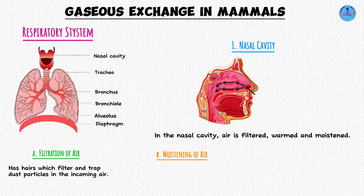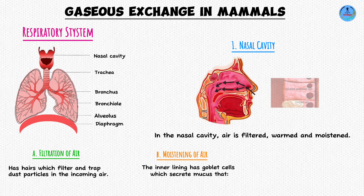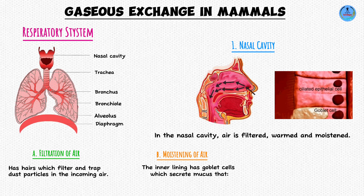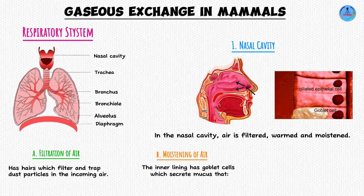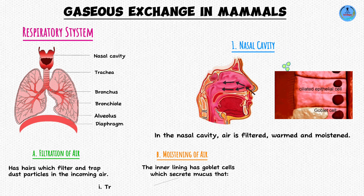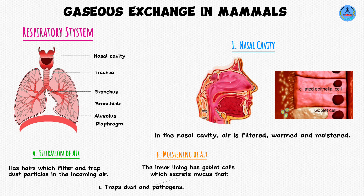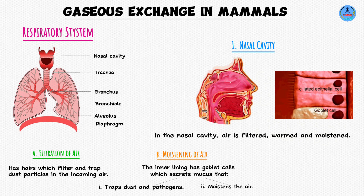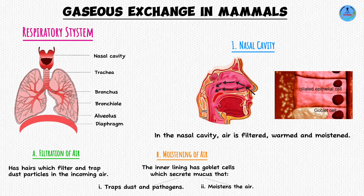How is the air moistened? The inner lining of the nasal cavity has specialized cells called goblet cells. A specialized cell is simply a cell that has a specific function, and in the case of goblet cells, their function is secretion of mucus. This mucus helps in trapping dust particles and any microorganisms present in the incoming air, preventing them from entering the lungs. The mucus also moistens the air as it enters the nostrils, which is important because moist air is more efficient at diffusion than dry air.